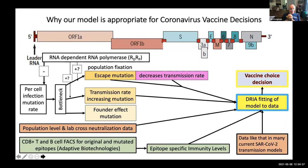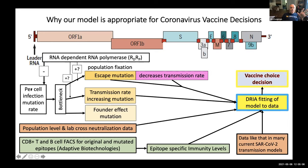This virus has an RNA-dependent RNA polymerase, which is a proofreading mechanism that keeps errors from happening. If you look at the per-cell infection mutation rate on the left side, that rate is much, much lower for this virus than it is for influenza. Another big difference is the infection bottleneck — the total number of viruses transmitted from one person to another is much, much less for this virus. All of these things make a big difference in thinking about the evolution of this virus.